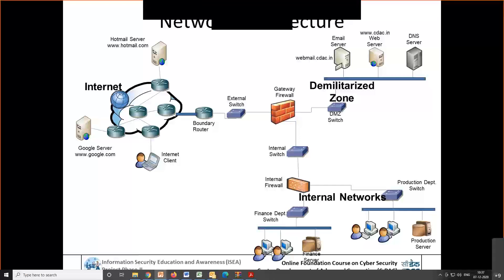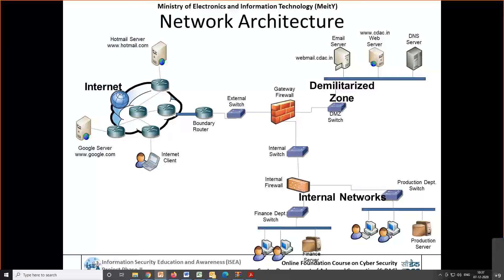Even if you want to access another department — generally when the number of users is small, they are all part of one network. However, if anything requires some kind of security or control between these two sub-networks, we need some kind of device to control that. The firewall is one such device — it can control communications between two departments, or even between two computers.